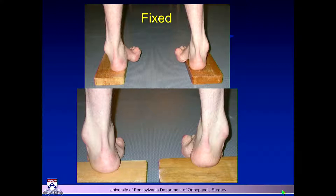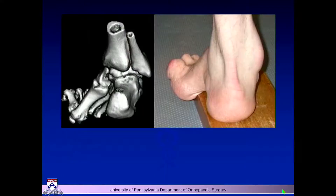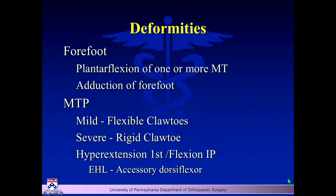If it's flexible you can think about tendon transfers; if it's not flexible you're going to have to think about osteotomies and fusions — that's how you define it. Sometimes we get CTs with 3D reconstructions, which are pretty cool to look at and manipulate. On the forefoot, you get plantar flexion of one or more metatarsals, adduction of the foot at the MTP joint, and often claw toe deformities.